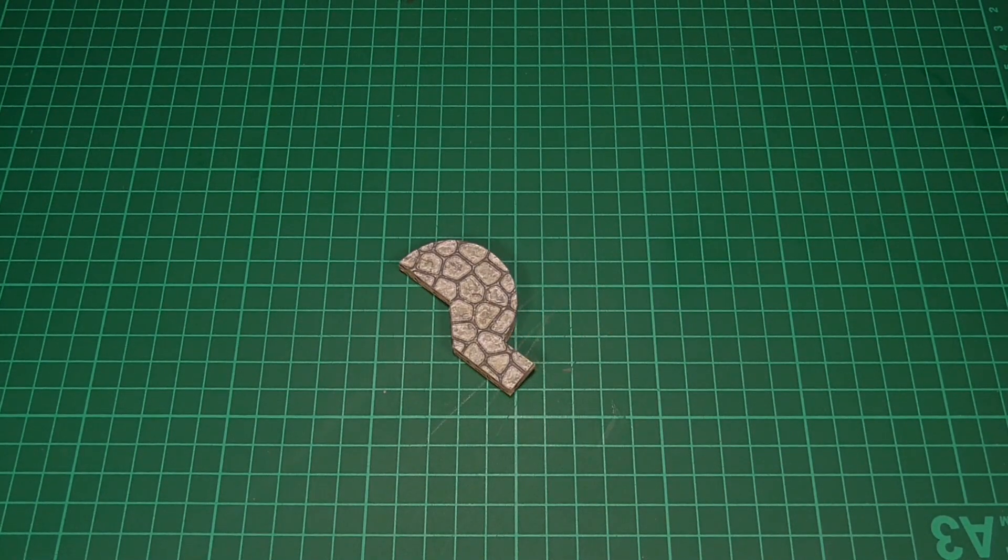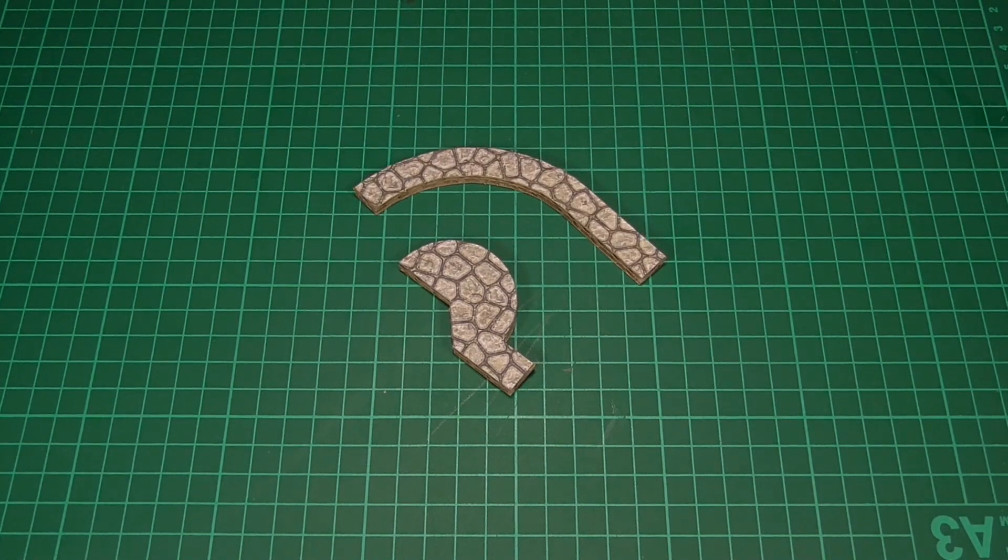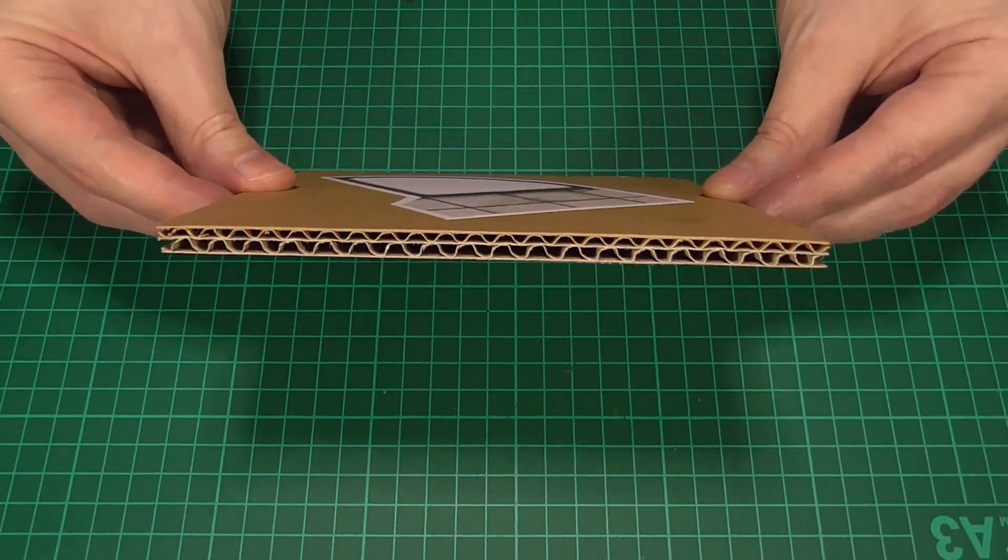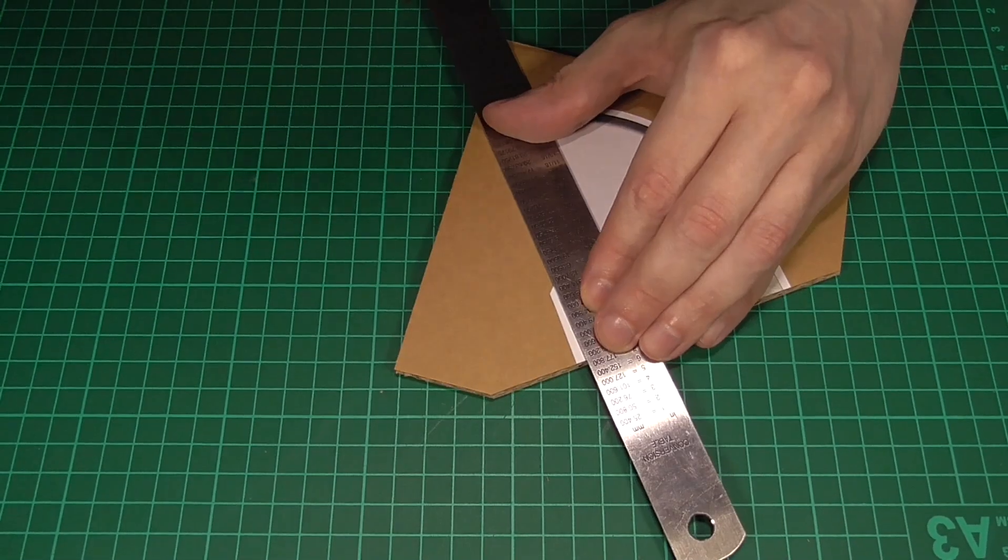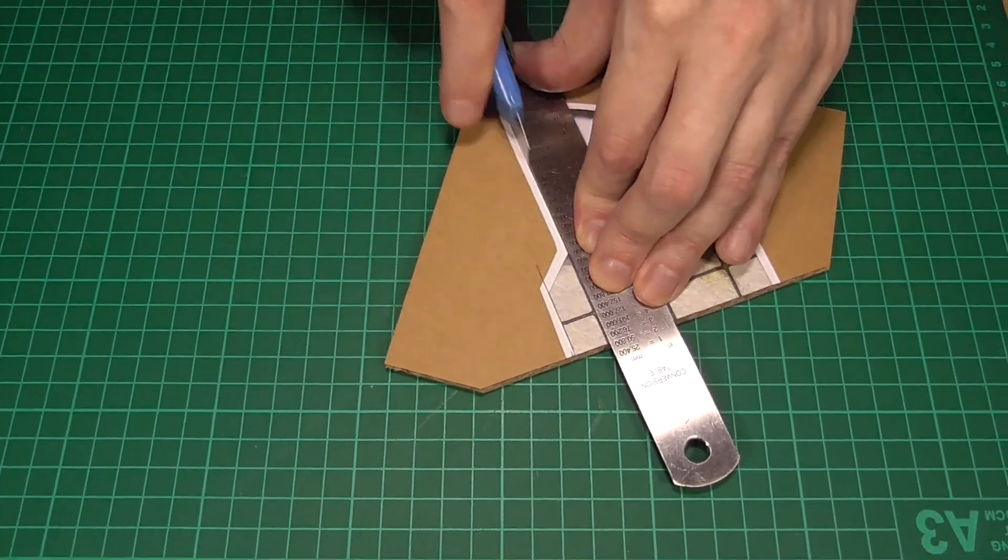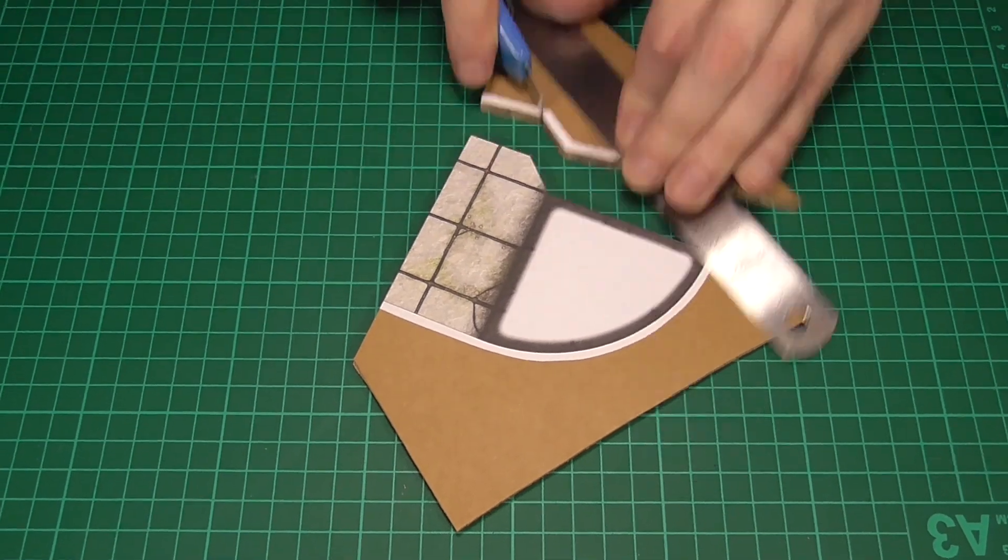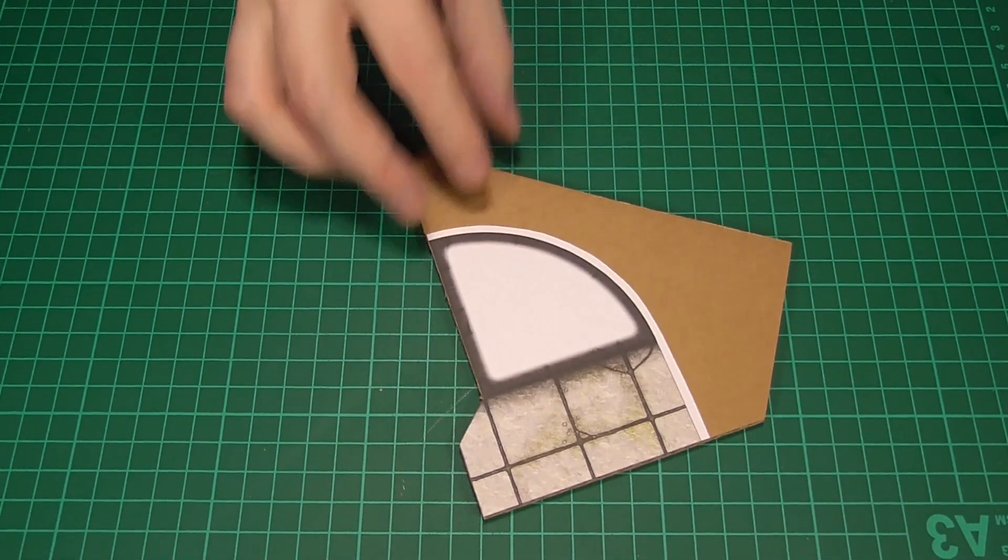And we will of course need to do the same thing with the other wall section as well. Now for the final piece, we'll just need to glue this floor pattern to some more corrugated card. And again, cut all of the straight edges to size. But this time we're going to leave the curved edge intact. We'll come back to that later. So something like that.